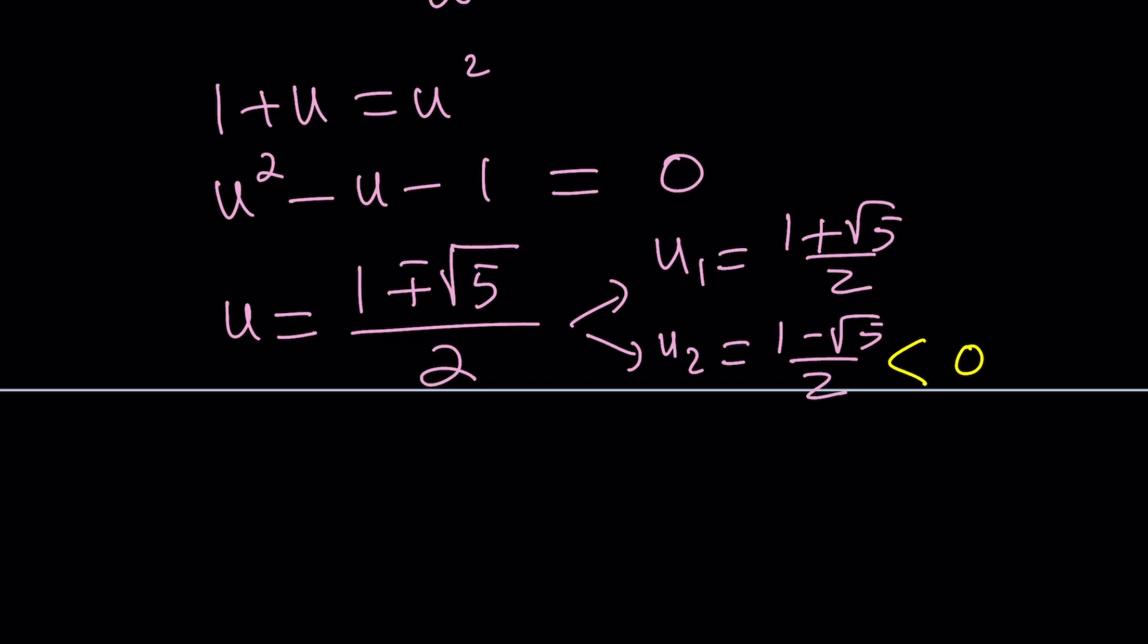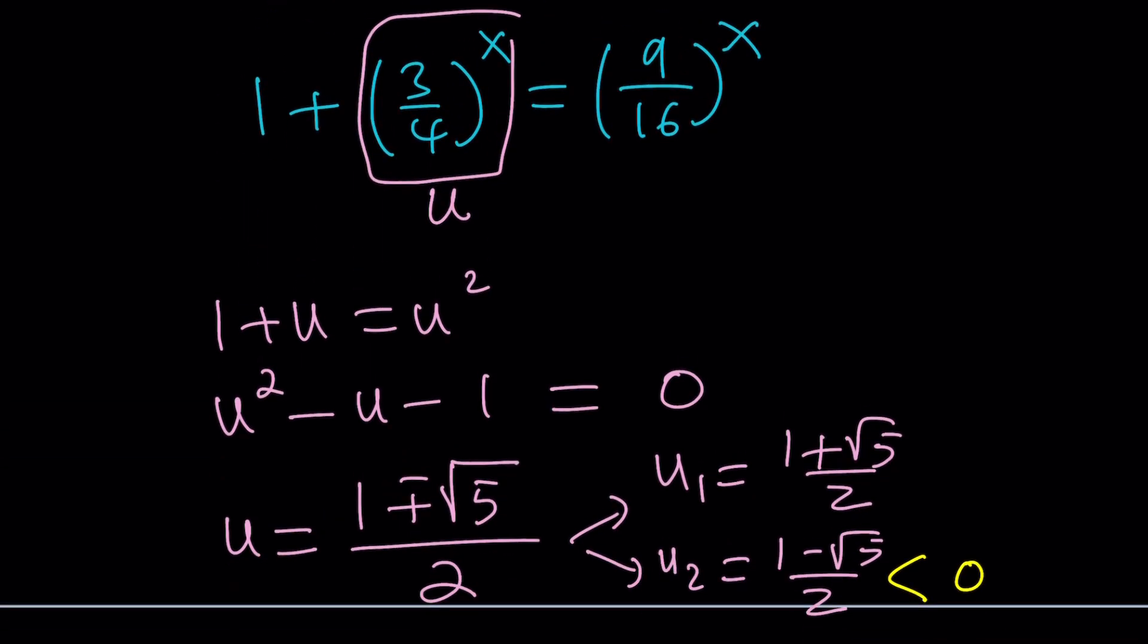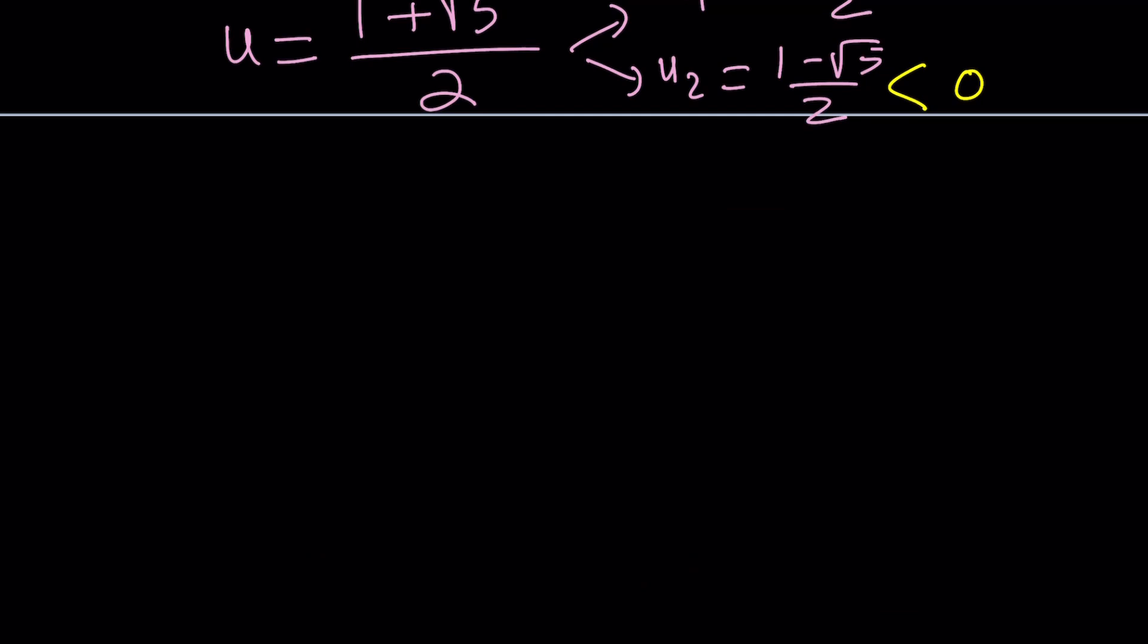So, why does that matter? Because u is equal to 3 fourths to the power x. A positive base raised to a power cannot be negative. Well, sort of. So, u is equal to this. And now, if this equals 1 plus root 5 over 2, then we're good because we could use natural log on both sides. Can't we? Let's go ahead and do it. So, this gives us, if we ln both sides, and we're looking for real solutions, by the way,